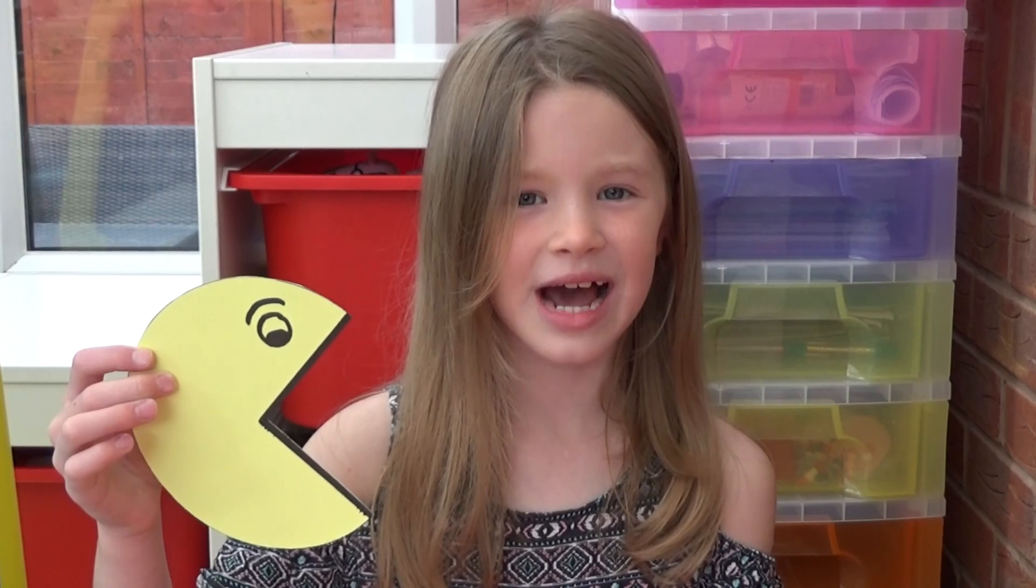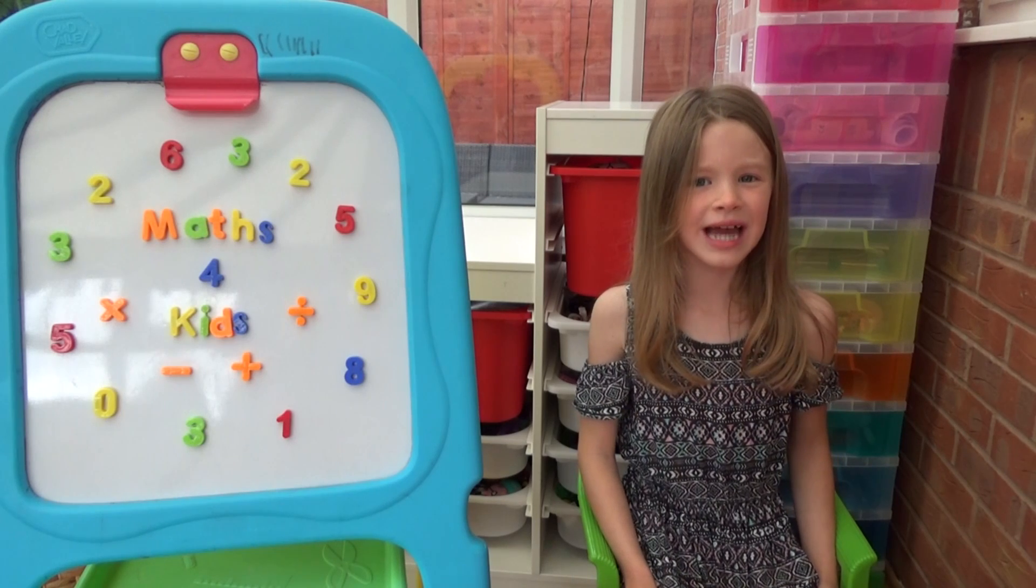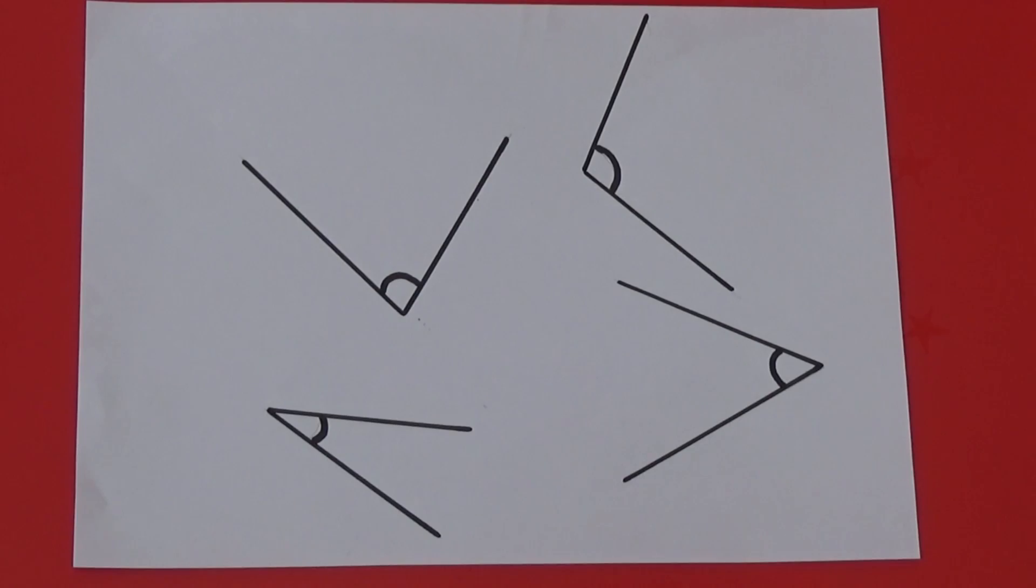I've made a right angle tester to help. First we need to know what an angle actually is. An angle is the space between two lines when they come together at a point called the vertex. The space between each of these sets of two lines is the angle.